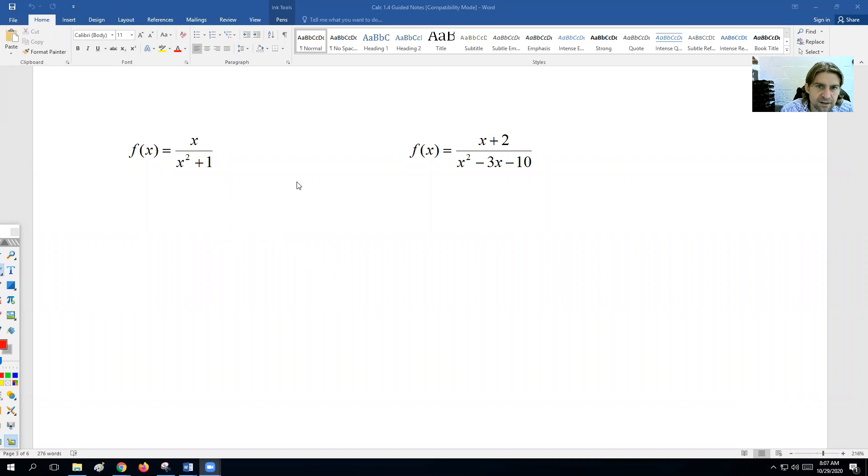Next, let's look at this problem. We got x over x squared plus 1. Is there any way we can make x squared plus 1 equal to zero? That would be when x squared equals negative 1, and we cannot take the square root of negative 1 in the real number sense. So there's no way that this denominator could ever equal zero. We would say that this is a continuous function.